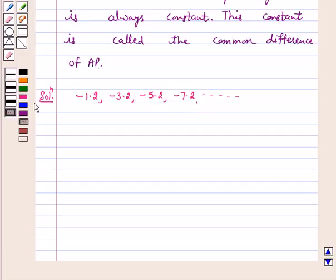We have a₂ minus a₁ is equal to minus 3.2 minus minus 1.2, which is equal to minus 2.